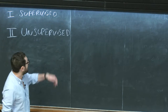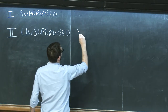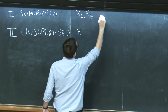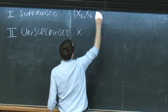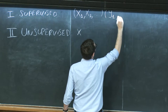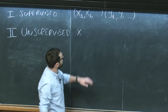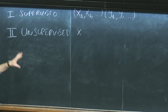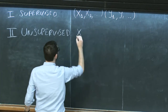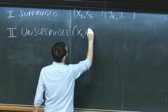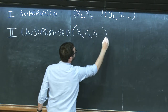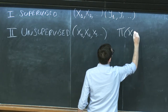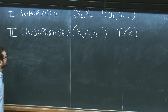Yesterday, in the supervised case, I had a lot of samples and I also had labels. The labels are the values that the ideal high-dimensional function takes on those inputs. In the unsupervised case, I only had samples and not labels, and the goal was to find the probability distribution according to which those samples are distributed.